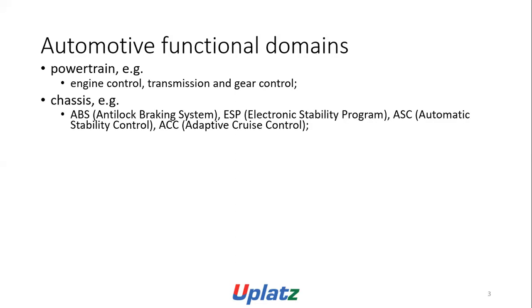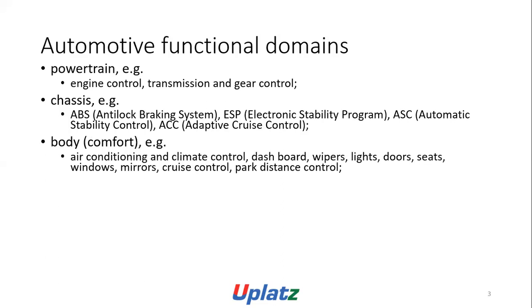Chassis — for example, ABS (anti-lock braking system), EPS (electronic stability program), ACC (automatic stability control), ECC (adaptive cruise control). Body comfort — for example, air conditioning, implement control, dashboard, vehicles, slides, road seats, windows, mirrors, cruise control, park distance control.